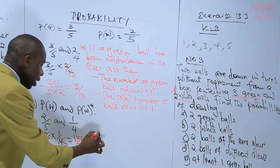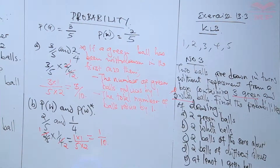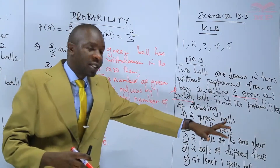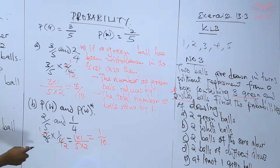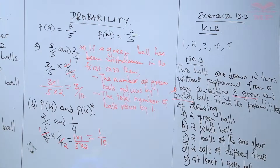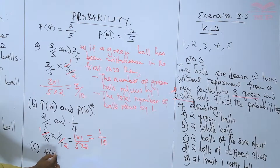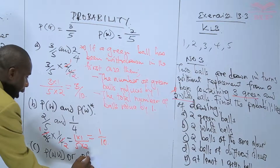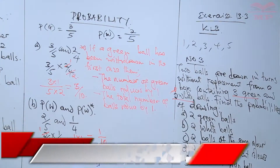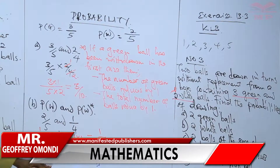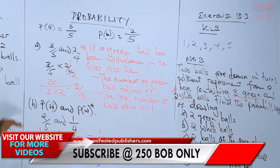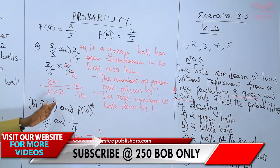That is the probability of picking two white balls, giving us two over twenty, which simplifies to one over ten. Now we can be asked to find the probability of picking the first one out of ten. In that instance, we'll say the probability of picking a white ball and a white ball, or the probability of picking a green ball and a green ball — meaning two green balls — and we've also talked of picking two white balls.